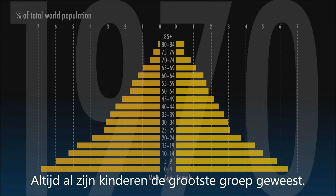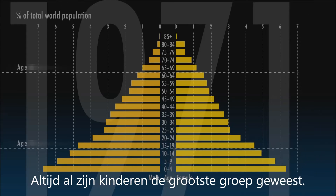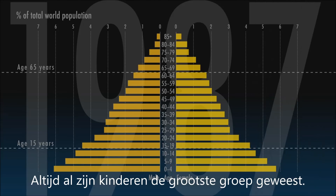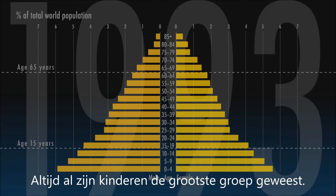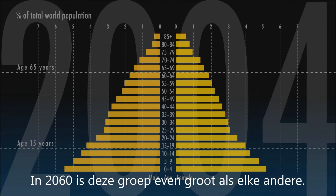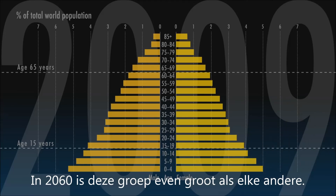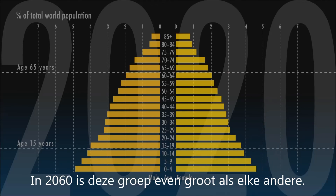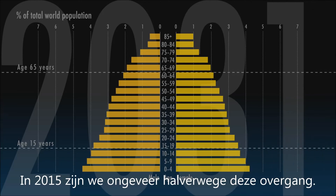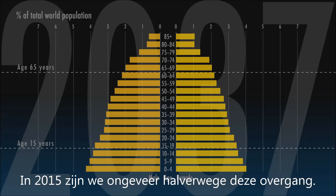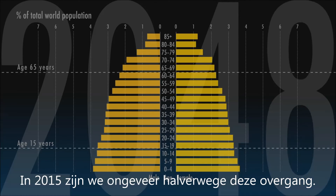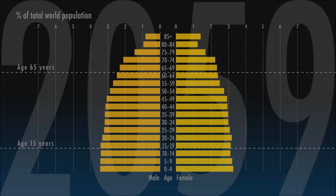For all of history, humans have lived in societies dominated, in numbers at least, by children. By 2060, children will be no more numerous than any other age group. The year 2015 is, roughly, the halfway point in this astounding transformation.